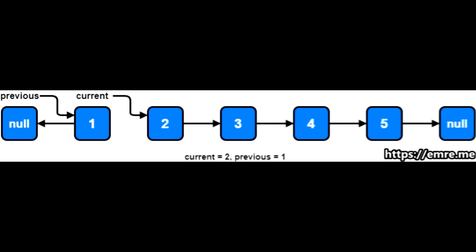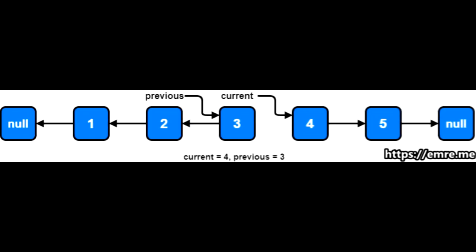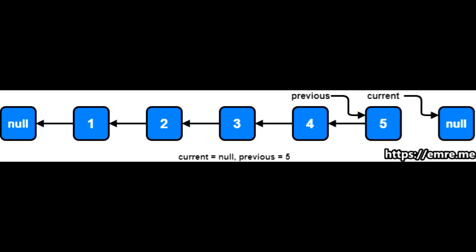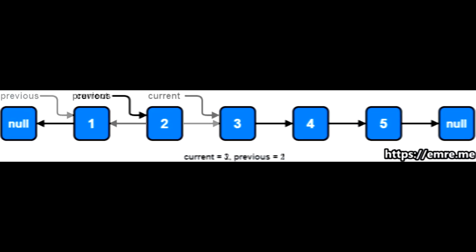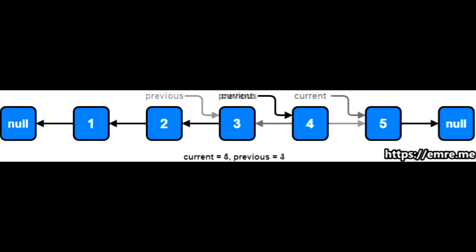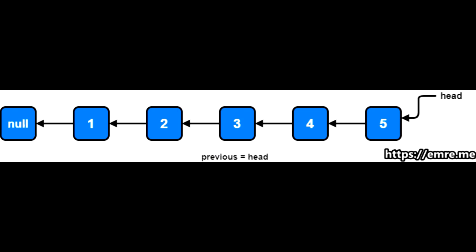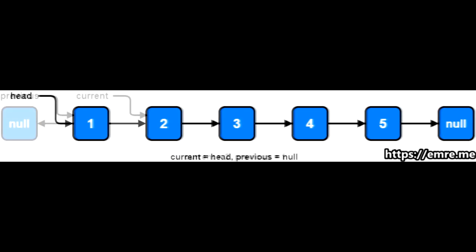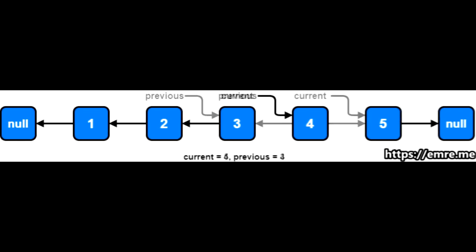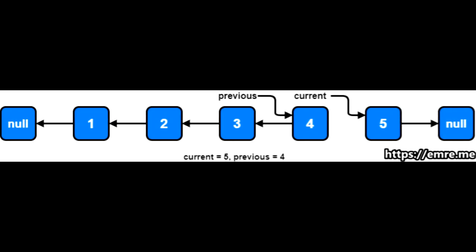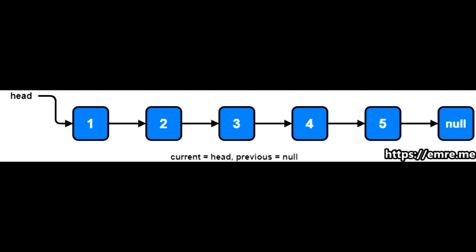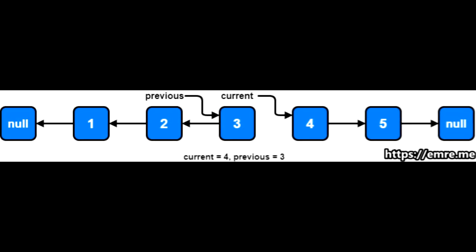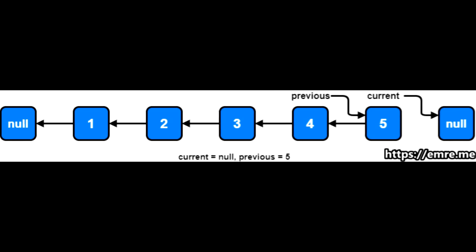This video is about in-place linked list reversal. Essentially, we have a previous node that points to null, and a current node that goes through the whole linked list. As we go through the list, we set current's next to point to the previous node and keep going. Every time we go down the list, current's next points to the previous node — reversing the list. In the end, we set our new head equal to the previous node.